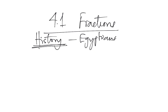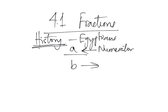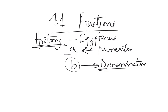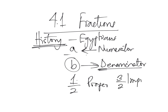The numerator is on top. If you're confused about remembering which is the numerator and which is the denominator, think of it this way: D for down, D for denominator. Using 1/2 as an example, that's called a proper fraction. If you had 3/2, that would be called an improper fraction. The difference has to do with which is bigger — the denominator or the numerator.